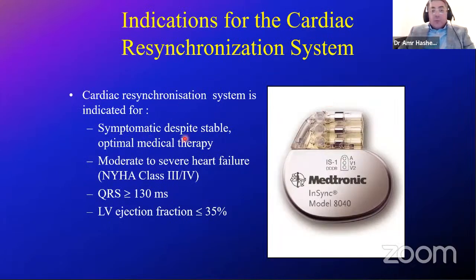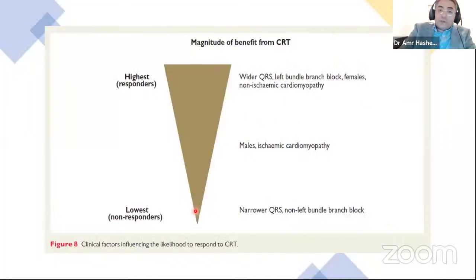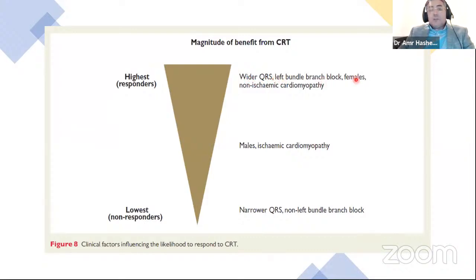CRT indications: symptomatic despite stable optimal medical therapy, NYHA class III or IV heart failure, QRS ≥130 milliseconds, and LV ejection fraction ≤35%. Maximum benefit is seen in patients with wider QRS, left bundle branch block, female sex, and non-ischemic cardiomyopathy.